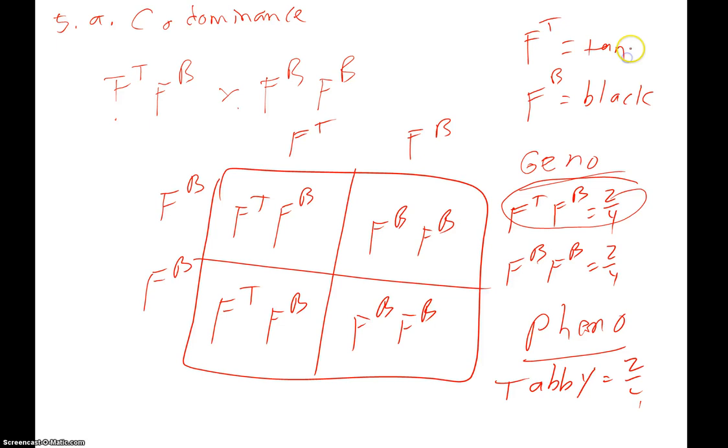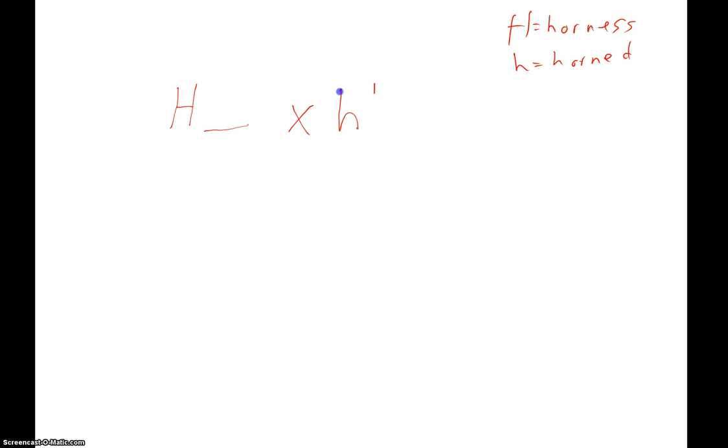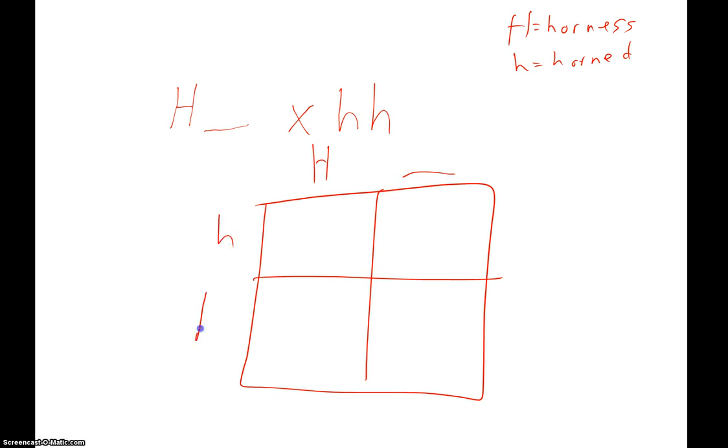A bull without horns, so that means that bull has to have at least one capital H. That other allele could be a capital H or it could be a lowercase h. We just don't know yet. It's crossed with a cow with horns. To have horns, you'd have to have two lowercase h's. So that's our cross. We just don't know what that other allele is for that animal. So this is what I would suggest. Let's do the Punnett square and use an underscore as a placeholder because we're not quite sure what goes there yet. And so this would come out like this. Now let's look at what the rest of the problem says to figure out if we can know what goes in that placeholder. Of the four offspring, one has horns and three are hornless.